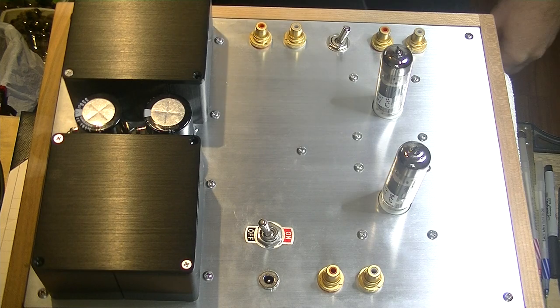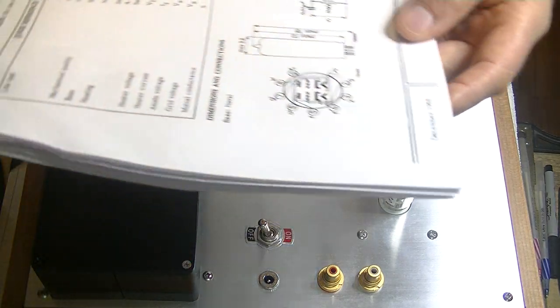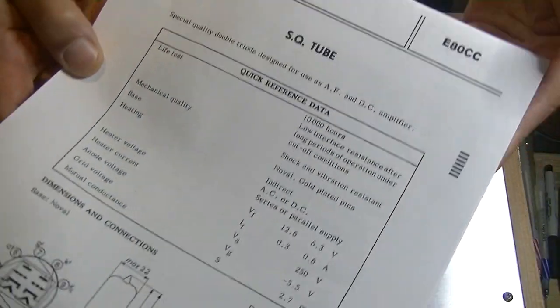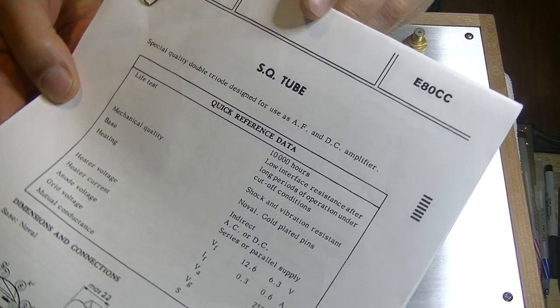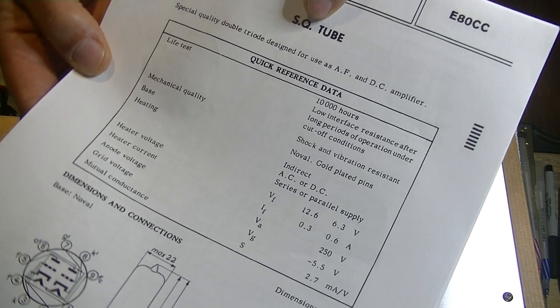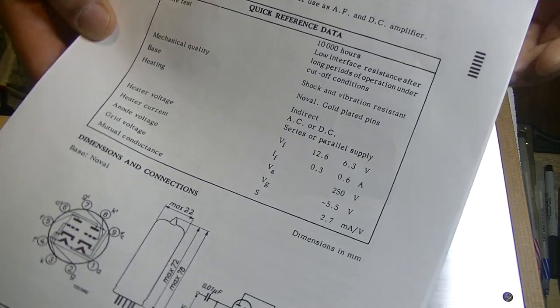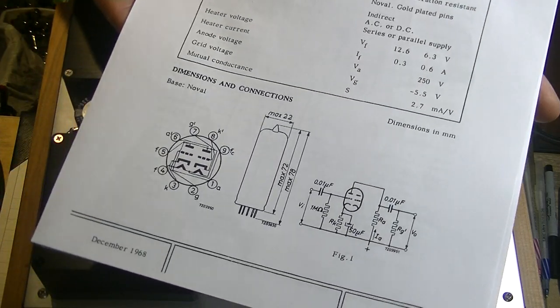All new designs start with the datasheet, or perhaps with a vision of what you'd like to create. Then you've got to get into the hard facts. This is a later Philips datasheet for the E80CC, or SQ tube, special quality.